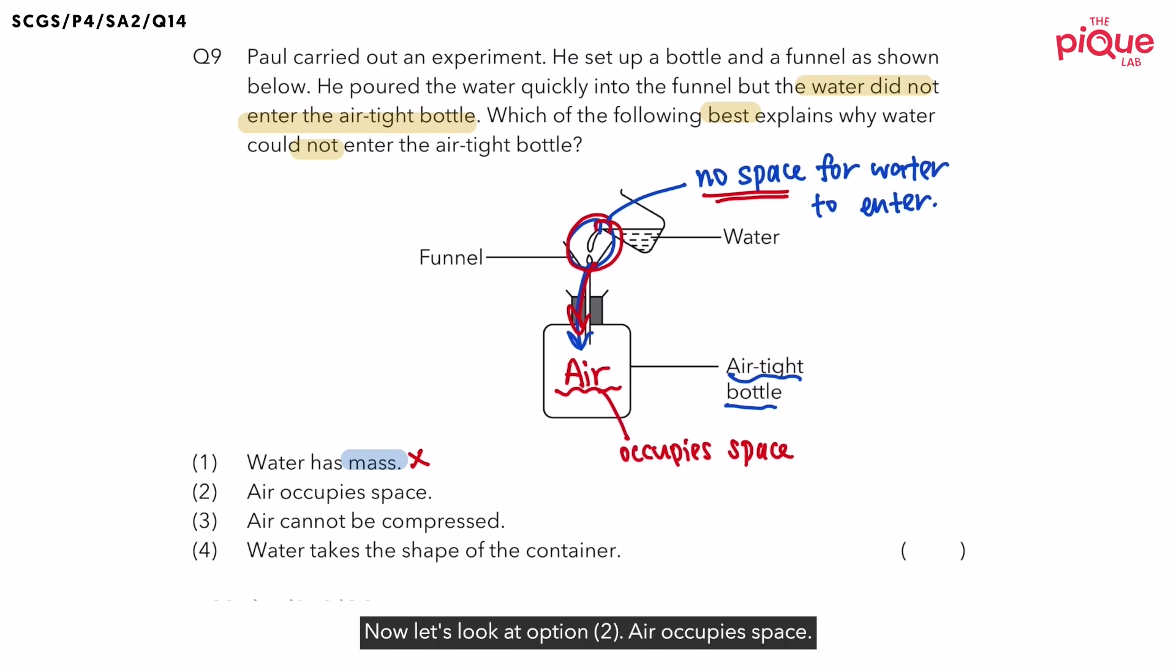Let's look at option two. Air occupies space. Now, is this the reason why no water could enter the airtight bottle? Yes, this is correct. Remember, we just said that it is because air occupies space in the bottle.